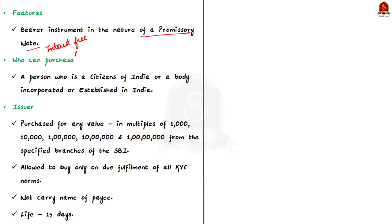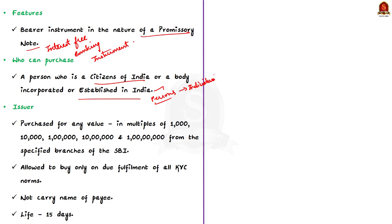The electoral bond may be purchased by a person who is a citizen of India, or it may be purchased by a body incorporated or established in India. The definition of person includes an individual, a company, an association of persons, a body of individuals, or any agency, office or branch owned or controlled by such person.